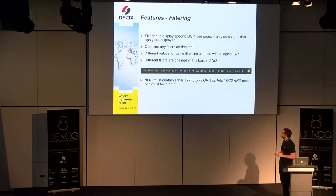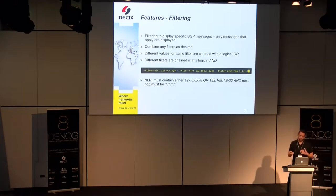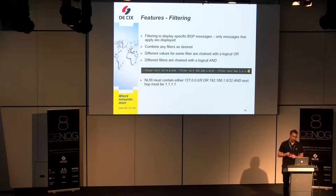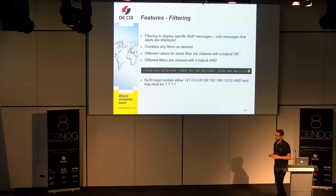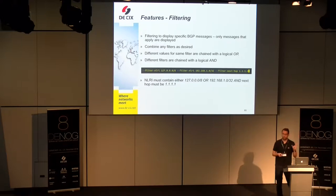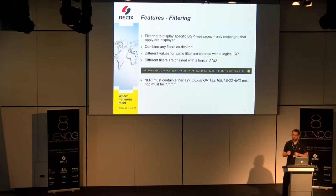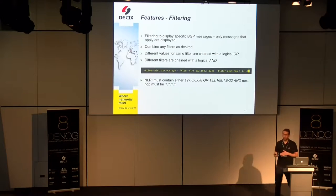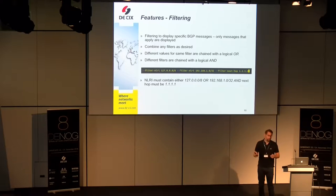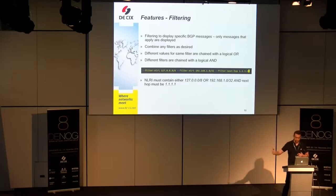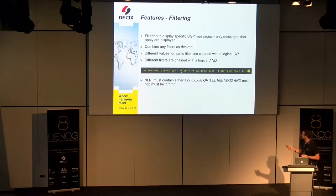These display filters can be combined. You can use a single filter or multiple filters. For instance, filtering for two prefixes is an OR connection — show me all BGP messages with either this IP or that IP. You can also add different filter types, which creates an AND connection. The example here says: either this prefix OR this prefix, AND this next hop.